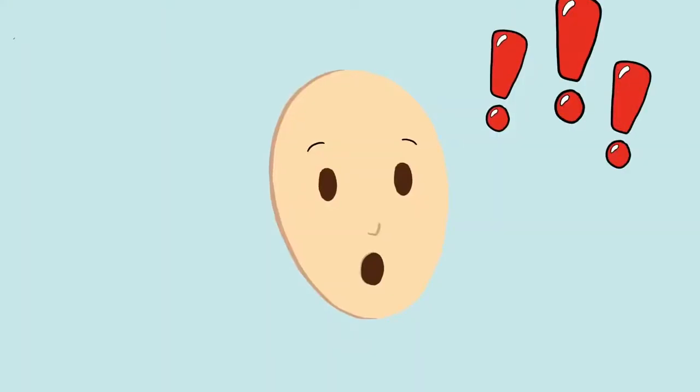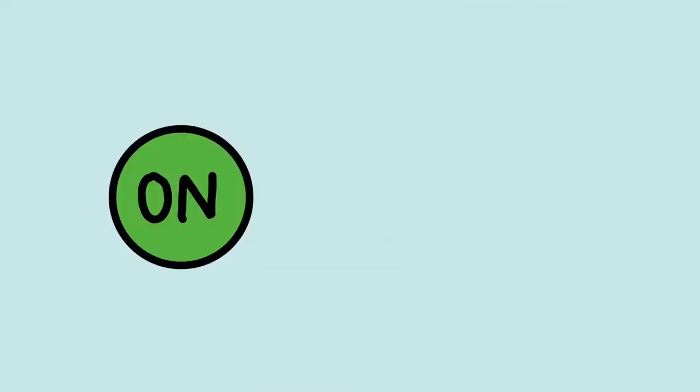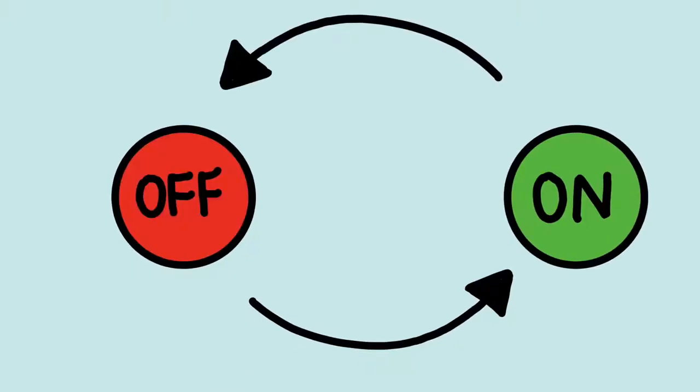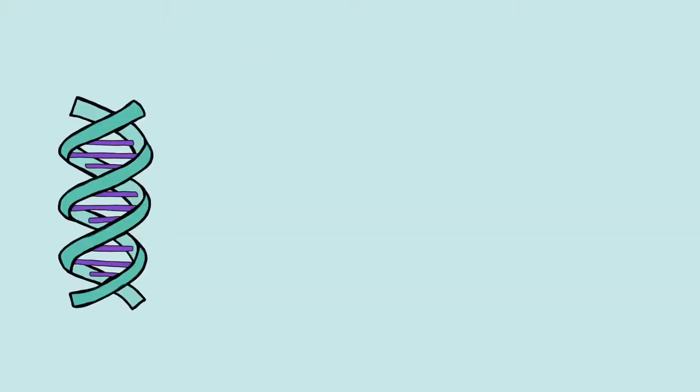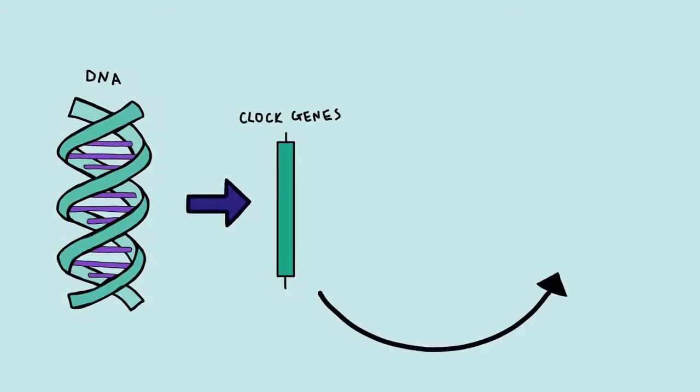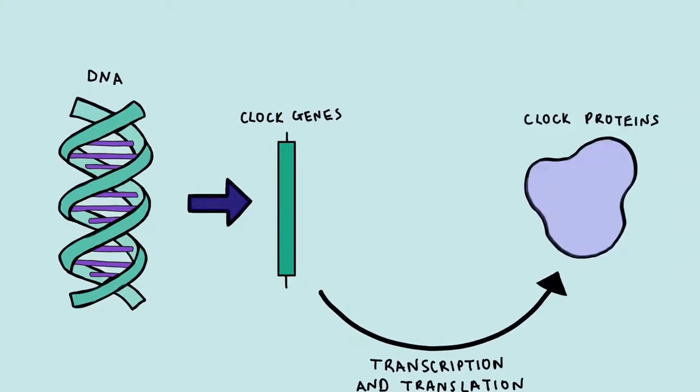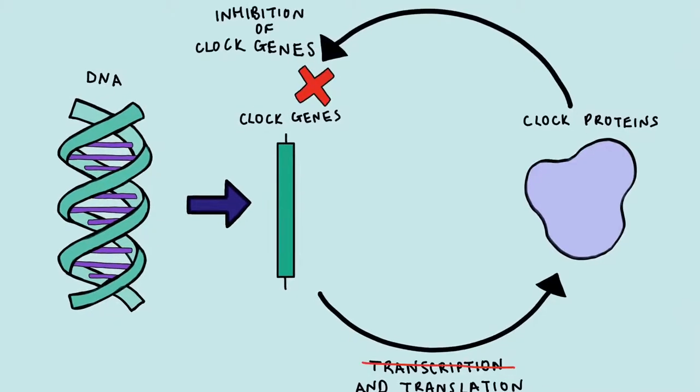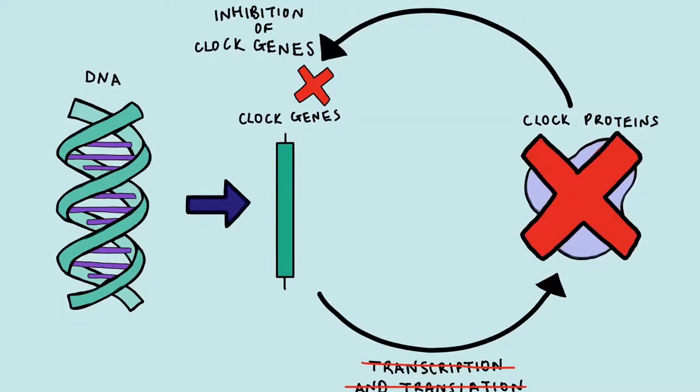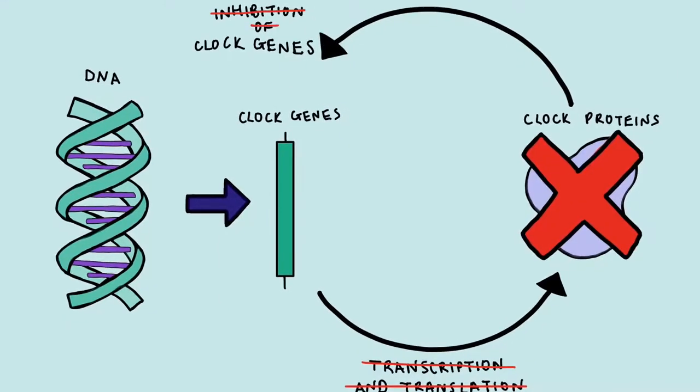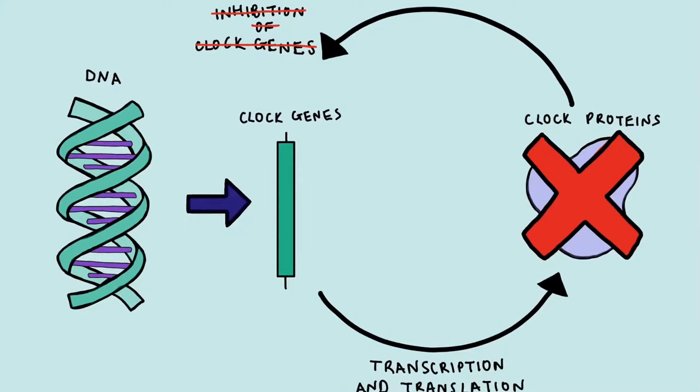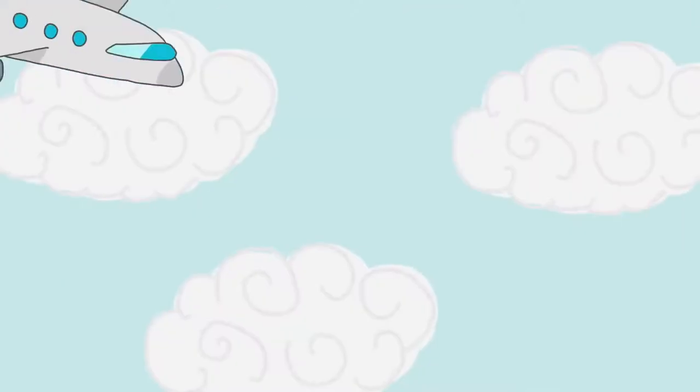This works using a negative feedback loop. This is where an increase in one signal causes a decrease in another. Clock proteins are produced using the clock gene code. These proteins prevent more proteins from being produced by the cell until they have all been degraded. This cycle of protein production and degradation takes around 24 hours.